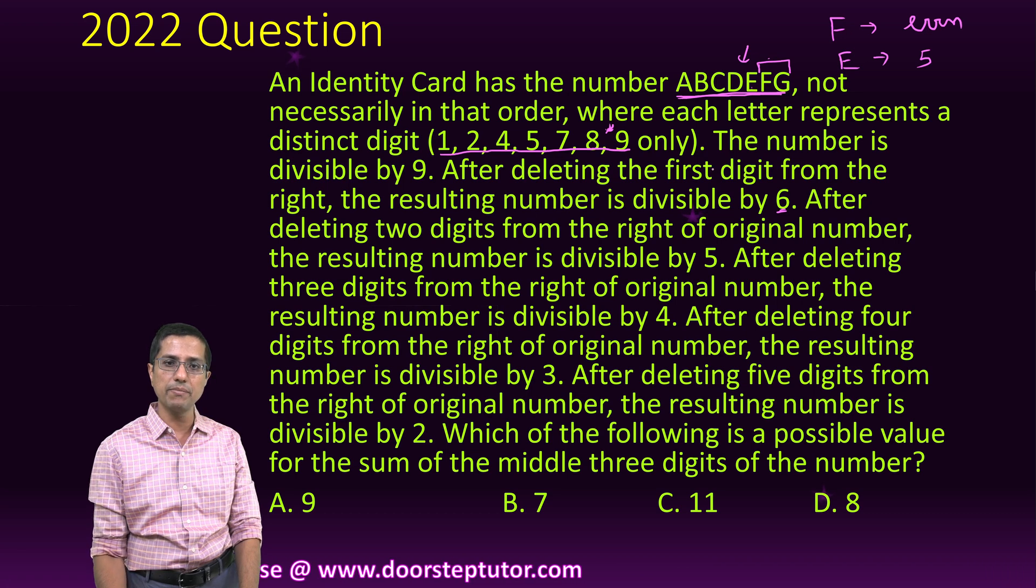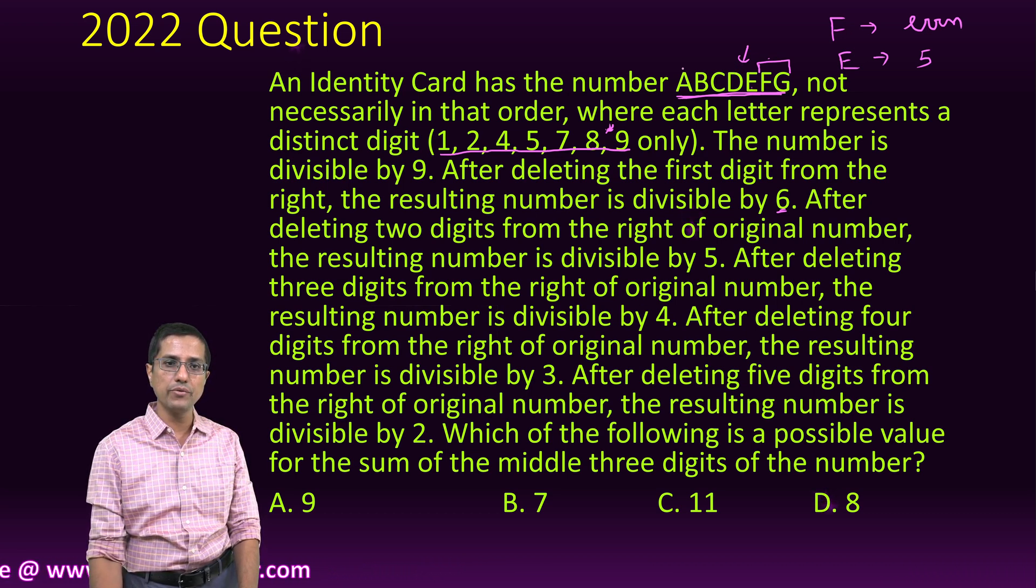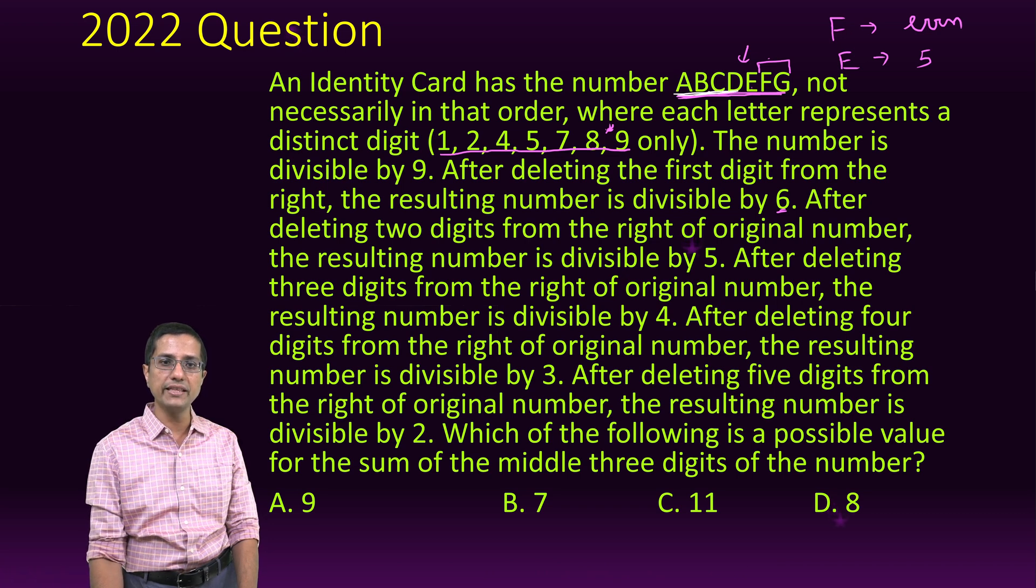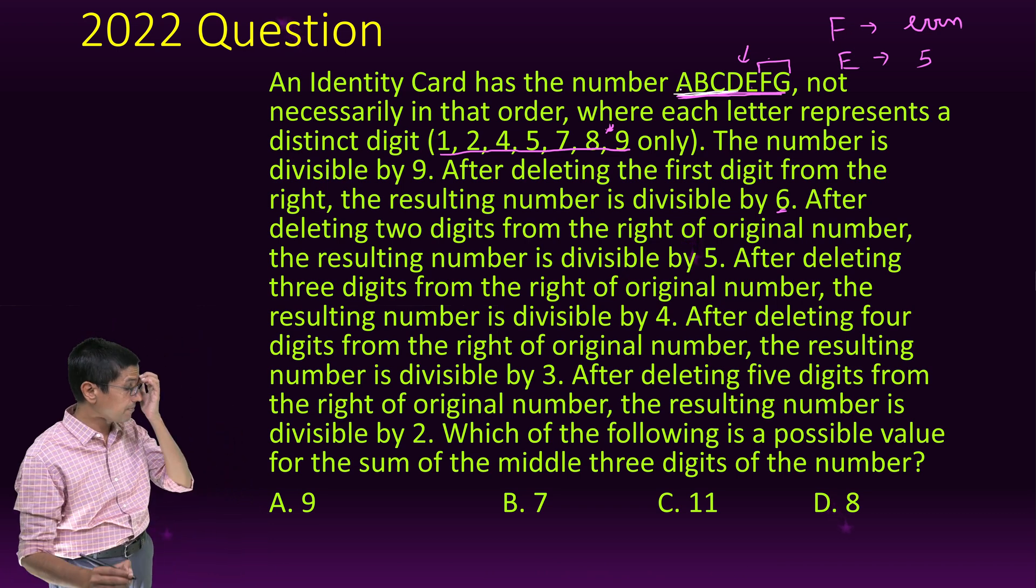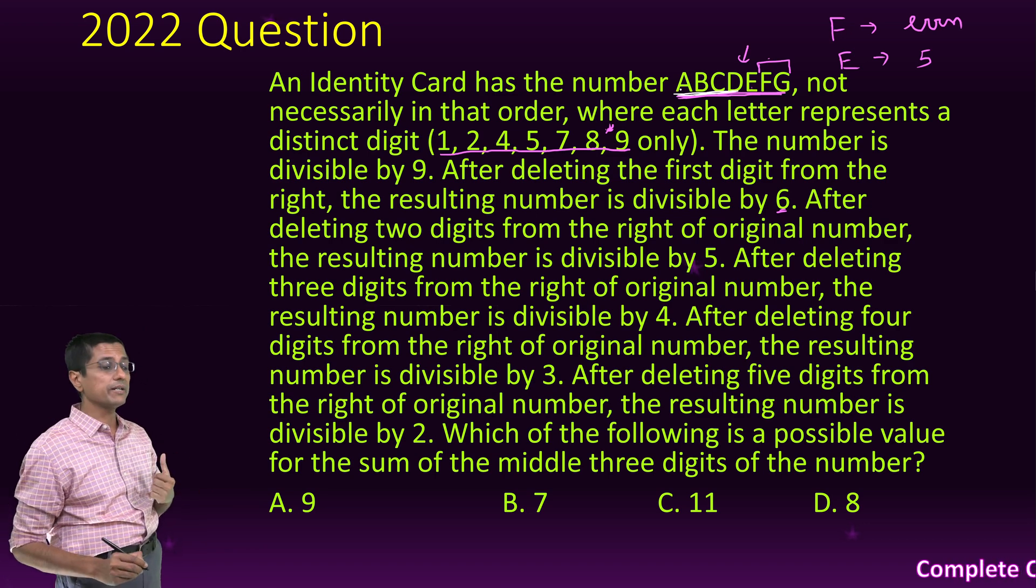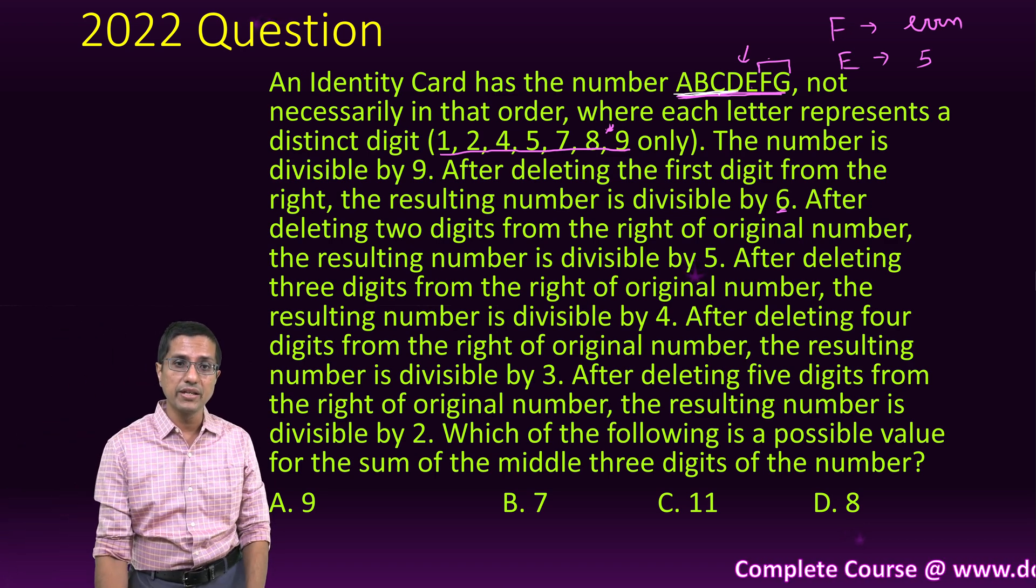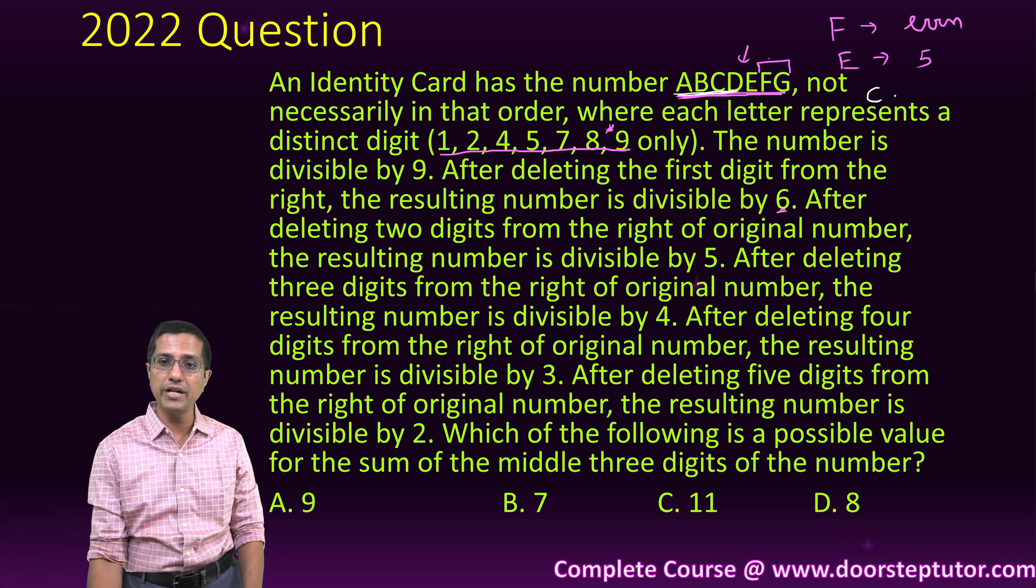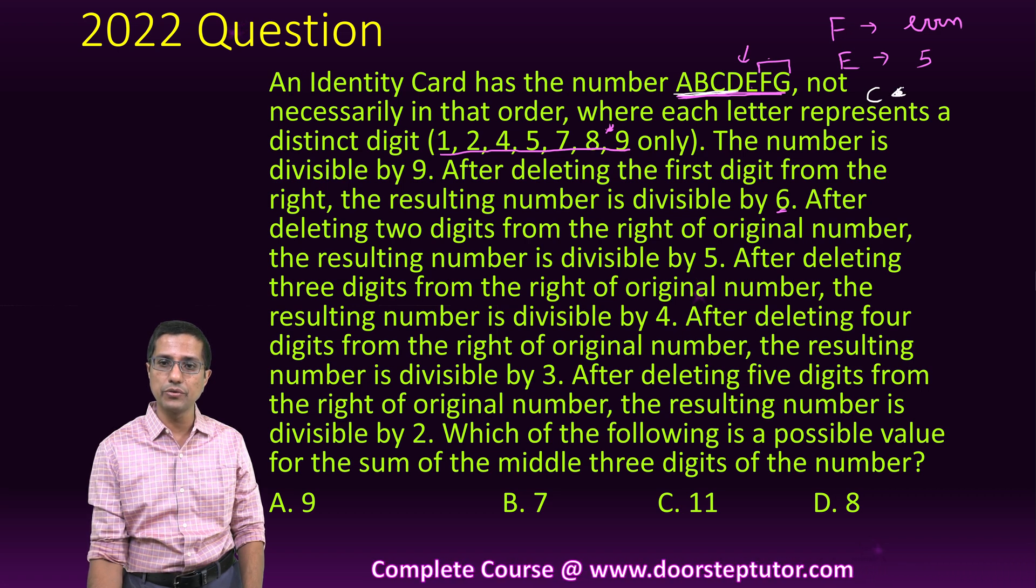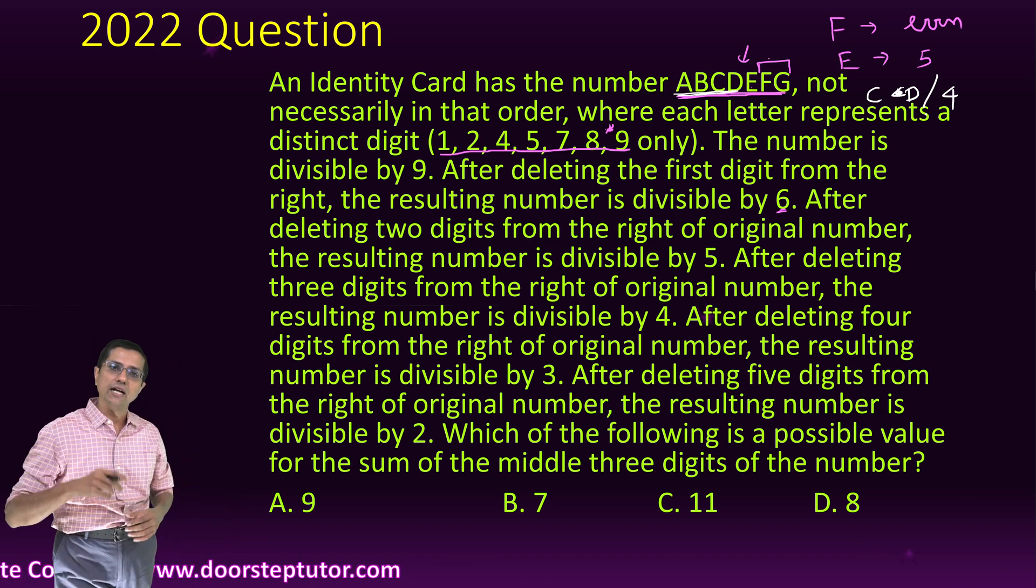After deleting three digits from the right of original number, the resulting number is divisible by 4. So if I look at only this number ABCD, then this number is actually divisible by 4. The test for divisibility by 4 says that CD have to be divisible by 4. So CD has to be divisible by 4.